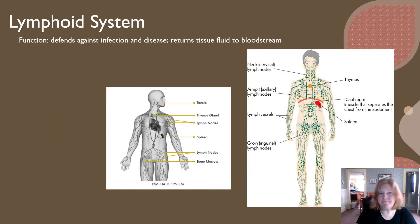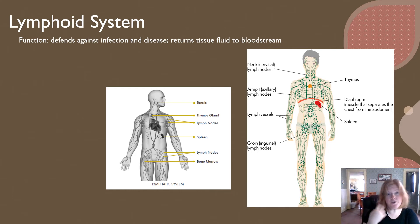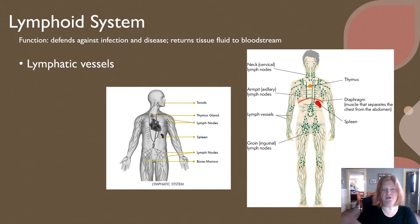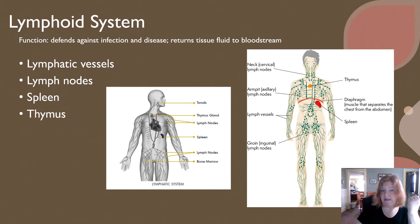The lymphoid system, sometimes called the immune system, defends against infection and disease and returns tissue fluid to the bloodstream. Fluid circulates through the lymphoid system — it contains primarily white blood cells and other signals for infection, but it is also recycling fluid outside of cells. It includes lymphatic vessels, lymph nodes, the spleen, the thymus, and sometimes the tonsils.